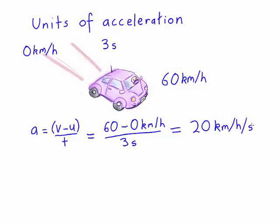What this means is that the car is going to get 20 km an hour faster each second. Hence the units are km per hour per second. So maybe those units make sense now. Let's have a look at one that's slightly more difficult.